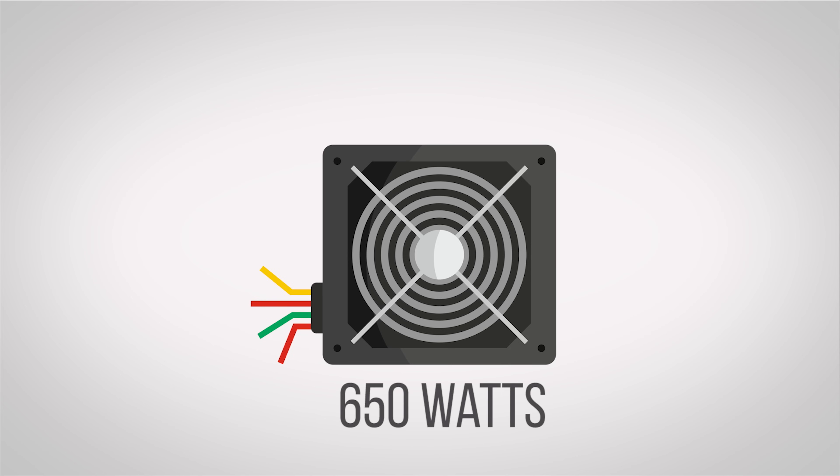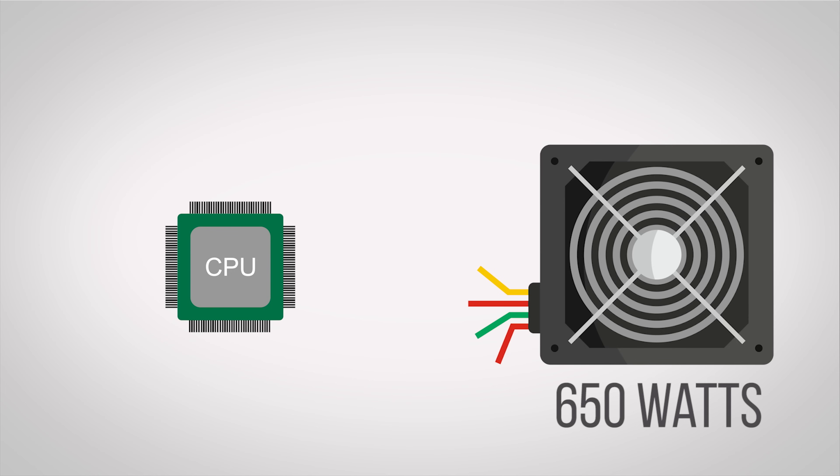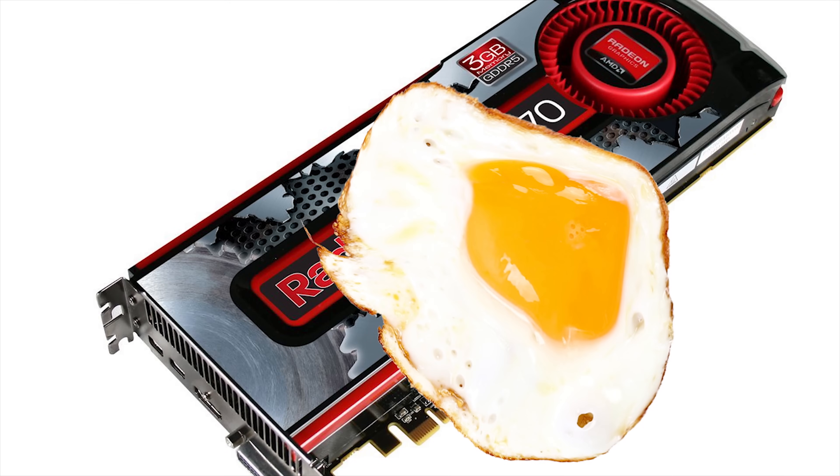For example, most of those 650 watts or whatever your power supply promises are delivered on the 12-volt rail. But imagine what would happen if you put 12 volts through a modern CPU, which only needs like a tenth of that to run. You'd fry it faster than an egg on a hot sidewalk.